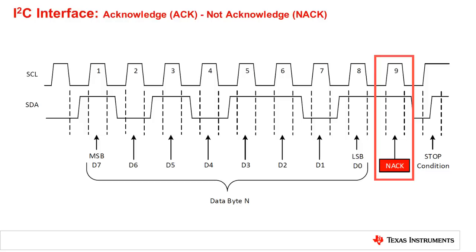Setup and hold times must be taken into account. There are several conditions that lead to the generation of a NACK. One, the receiver is unable to receive or transmit because it is performing some real-time function and is not ready to start communications with the master. Two, during the transfer, the receiver gets data or commands that it does not understand. Three, during the transfer, the receiver cannot receive any more data bytes. Four, the master receiver is done reading data and indicates this to the slave through a NACK.